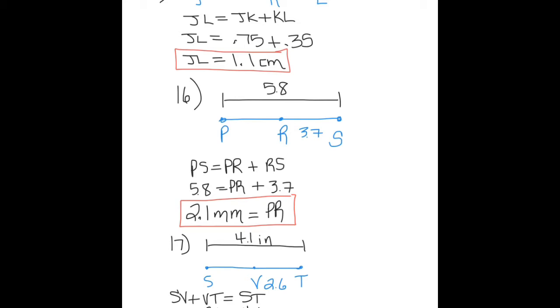Number 17: SV plus VT equals ST. SV plus 2.6 equals 4.1. SV equals 1.5.